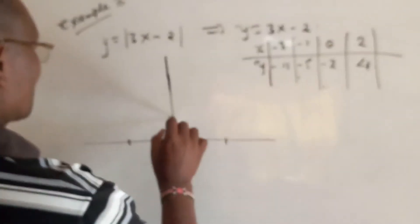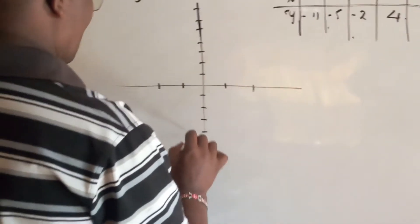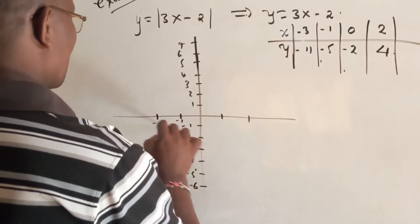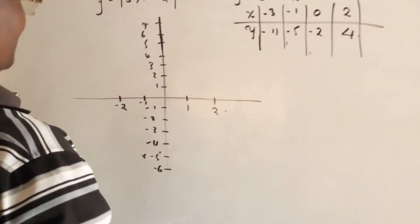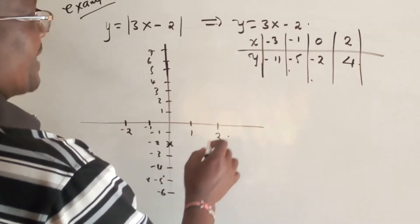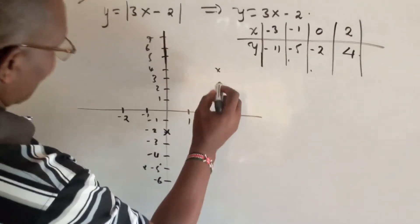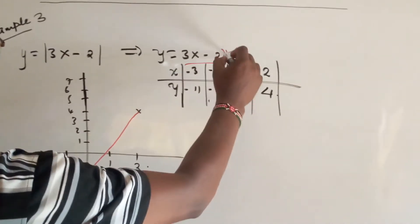Setting up our axes, we plot these points. When x is minus 1, y is minus 5. When x is 0, y is minus 2. When x is 2, y is 4. You can see that we are going to have a straight line. This is the whole line y is equal to 3x minus 2.